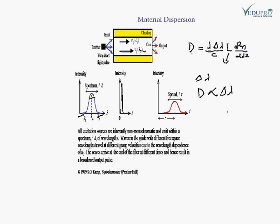Since d is directly proportional to delta lambda, it can be reduced by using a good monochromatic light source, such as a laser or laser diode. This is why this type of dispersion is called material dispersion — it occurs due to the properties of the material itself.